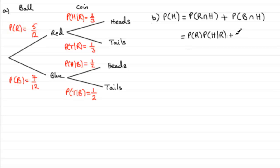Then we've got plus. And for this one, it would be the probability of drawing a blue ball, multiplied by the probability of getting a head, given that we drew a blue ball.